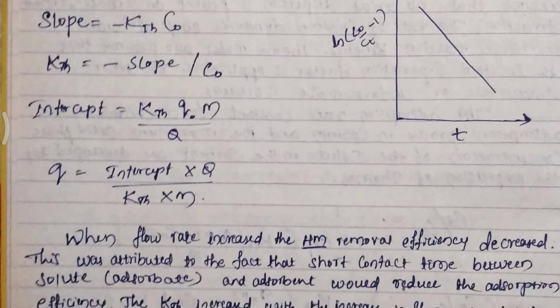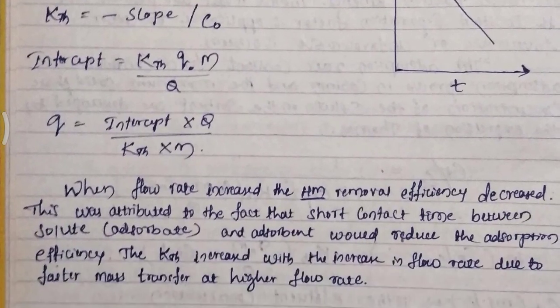When the flow rate is increased, the heavy metal removal efficiency decreases. This is attributed to the fact that shorter contact time between solute, adsorbate, and adsorbent reduces adsorption efficiency. The kth increases with increasing flow rate due to faster mass transfer at higher flow rates. Thank you.